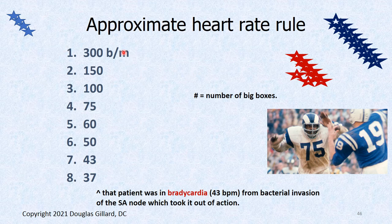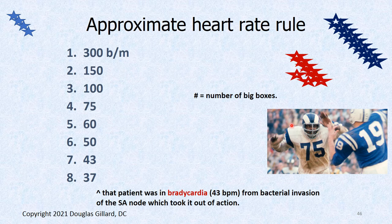You have to memorize the heart rate rule. The 300-150-100 rule: 300 is a perfect score in bowling. Half of 300 is 150. Then 100, then 75 — Deacon Jones of the LA Rams, number 75, about to crush Johnny Unitas. Then 60, 50, 43, 37. It's not super accurate when you get down to the lower numbers, but the first four are pretty accurate. Using the 1500 little box rule, this patient turned out to be about 43 beats per minute.